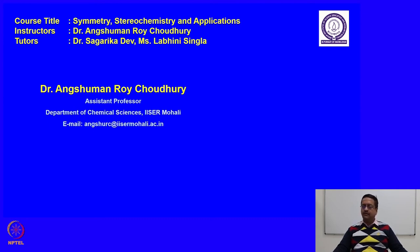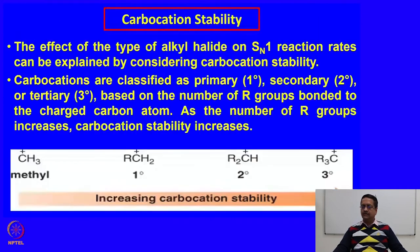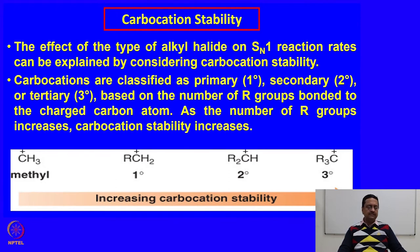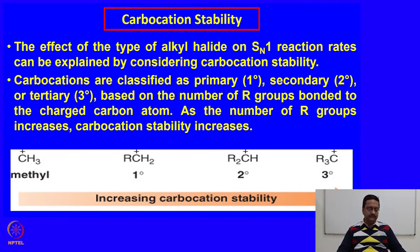In that context we would like to now continue and try to understand what are the factors that influence the stability of carbocation that is formed in case of SN1 reaction. The effect of the type of alkyl halide on SN1 reaction rates can be explained by considering the stability of carbocation.